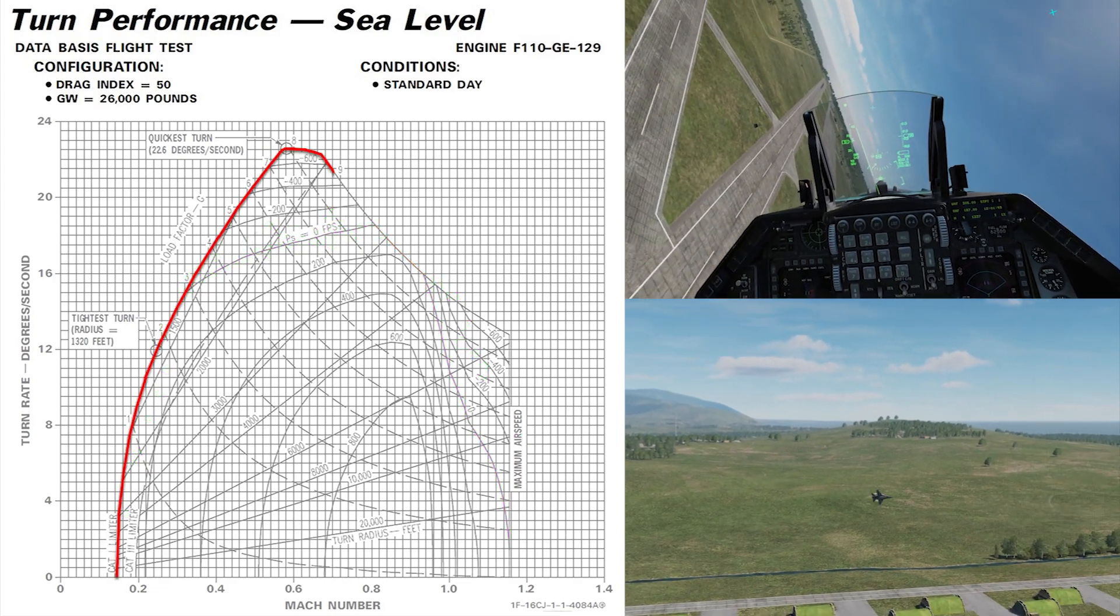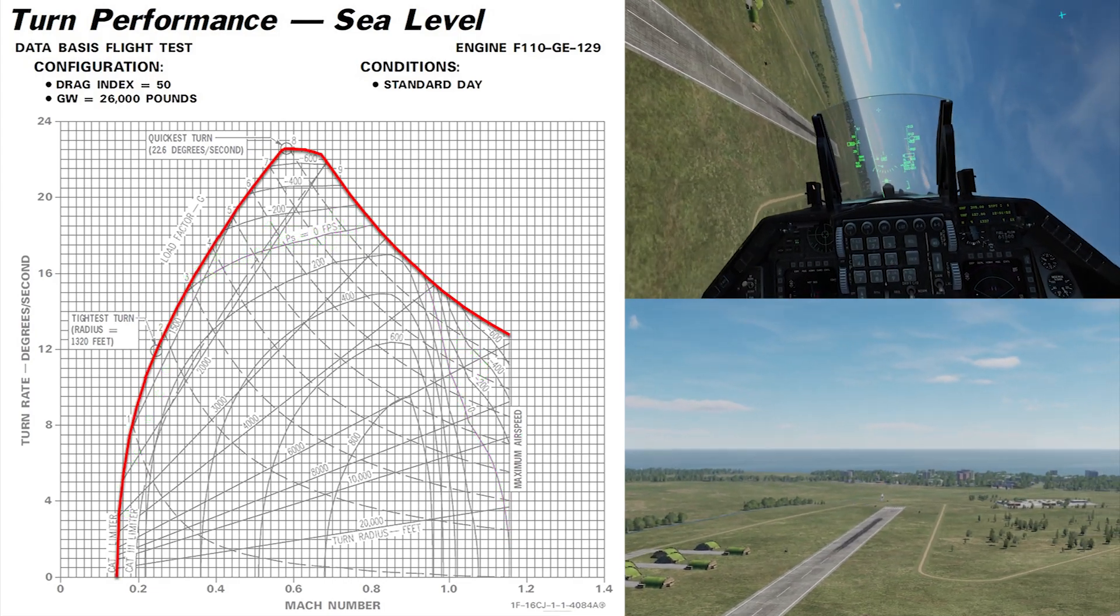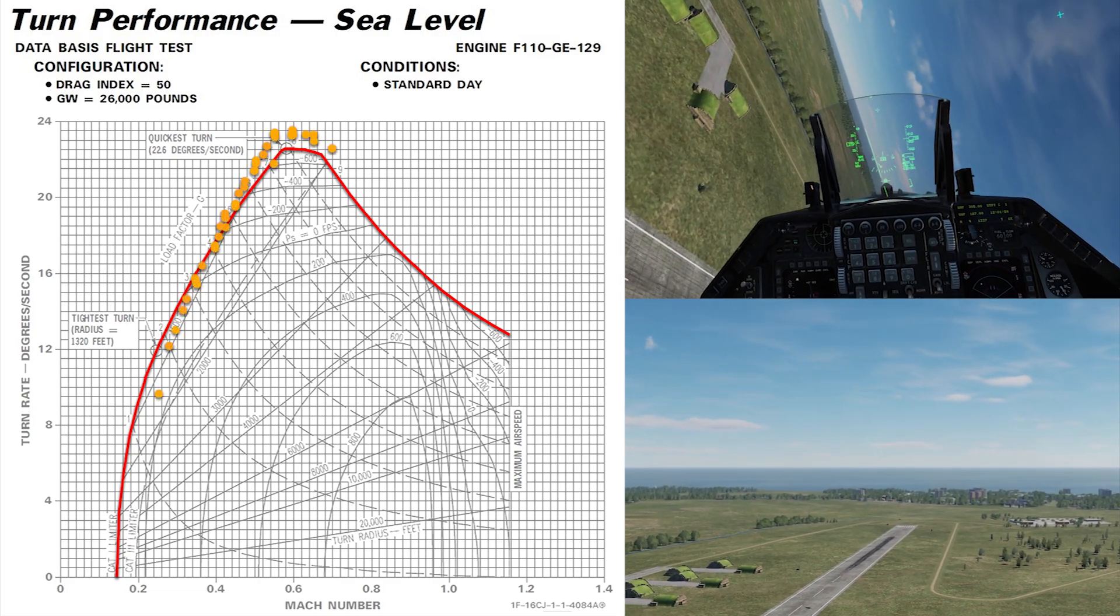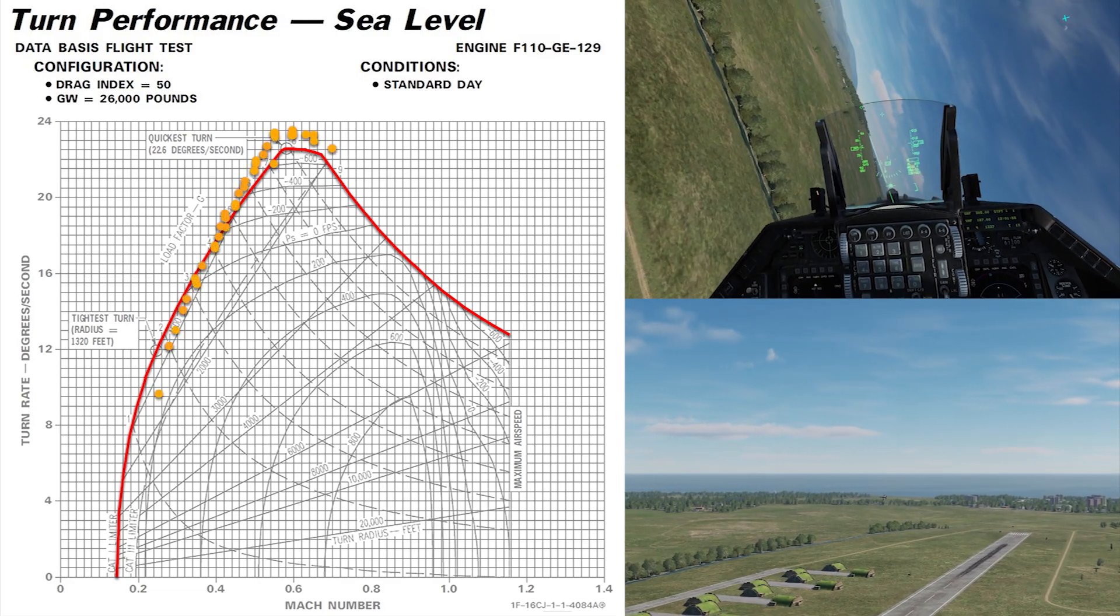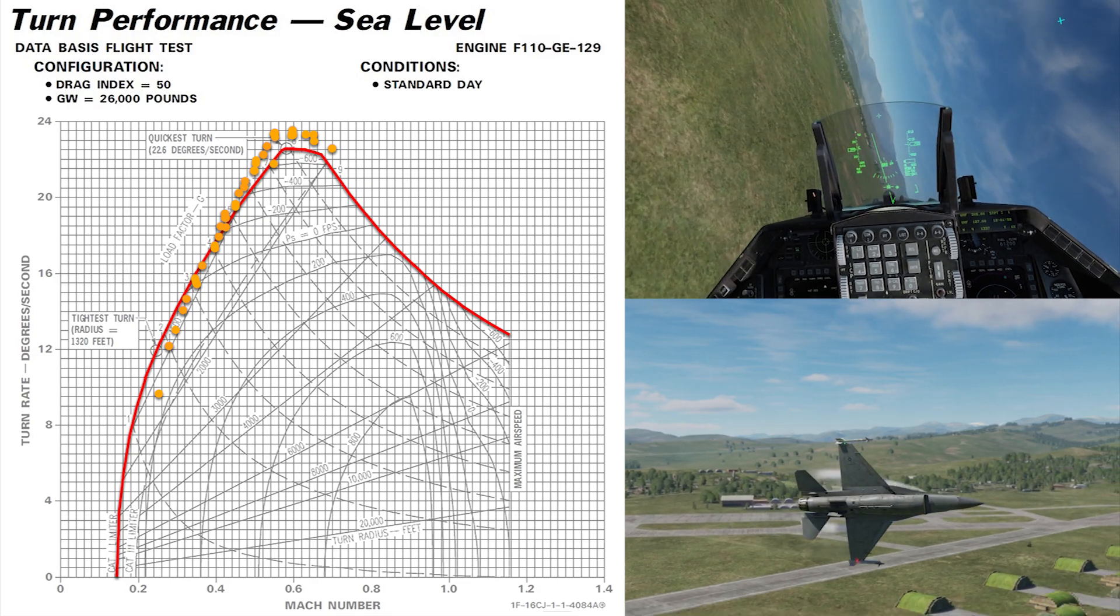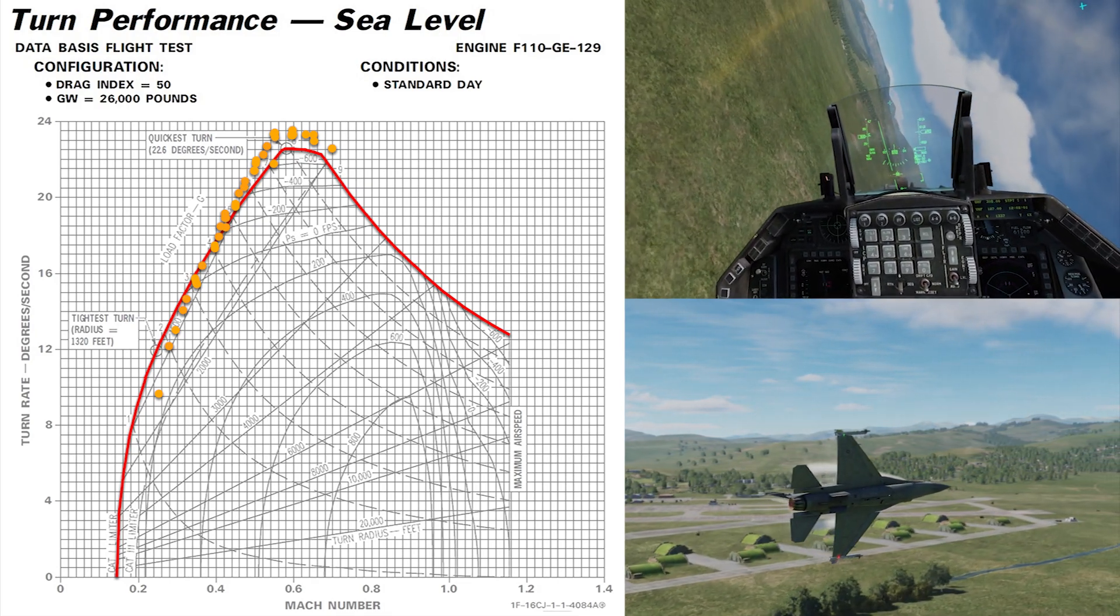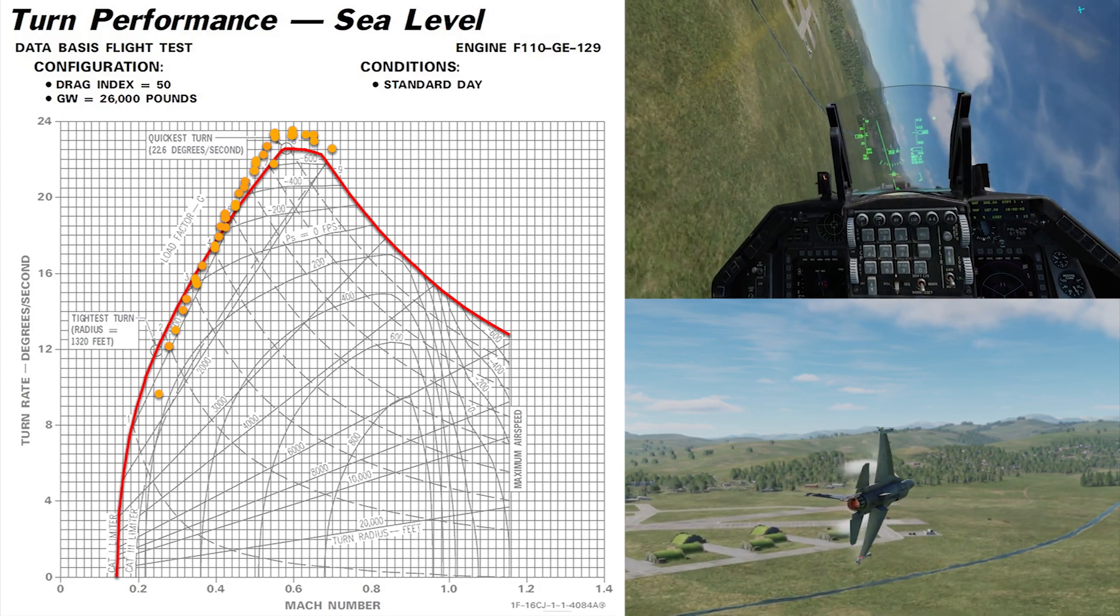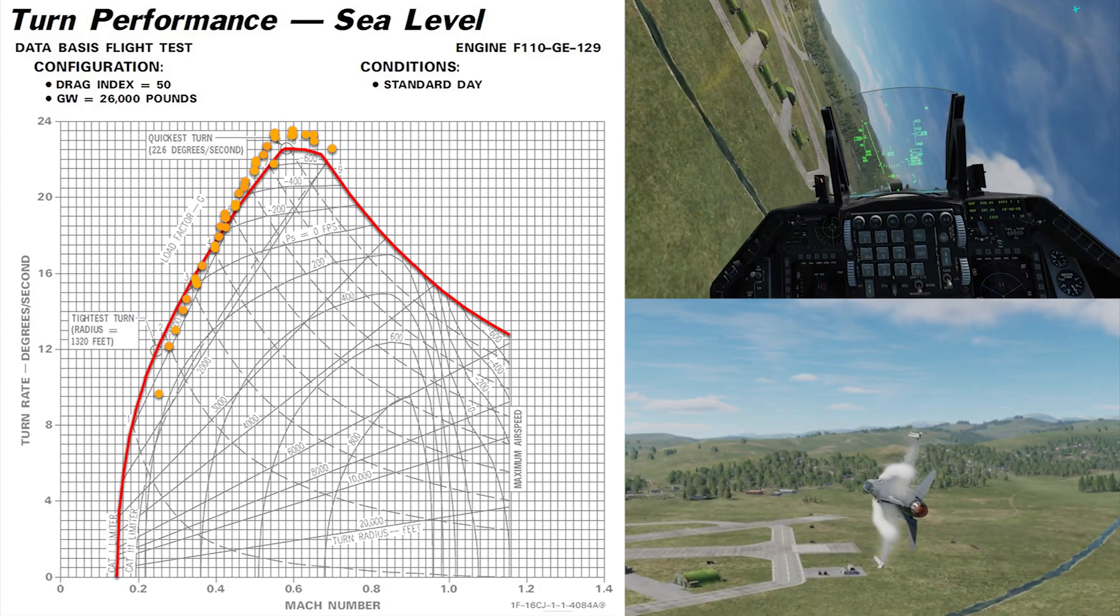But for dogfights, for our purposes in DCS, this is it. Now the next one is going to be instantaneous turns. That's the red line, that's what it should perform, and here are the orange dots, that's what I got out of it. You can see that it's right there, it's right on the line.